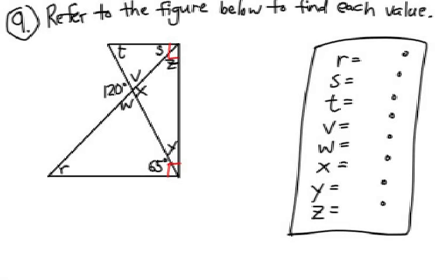Alright try this one. In this figure we have two perpendicular lines. We want you to find the measure of each angle in degrees: R, S, T, V, W, X, Y, Z. You try it first and see if you can figure out not only what they are, but why they are measured that way.